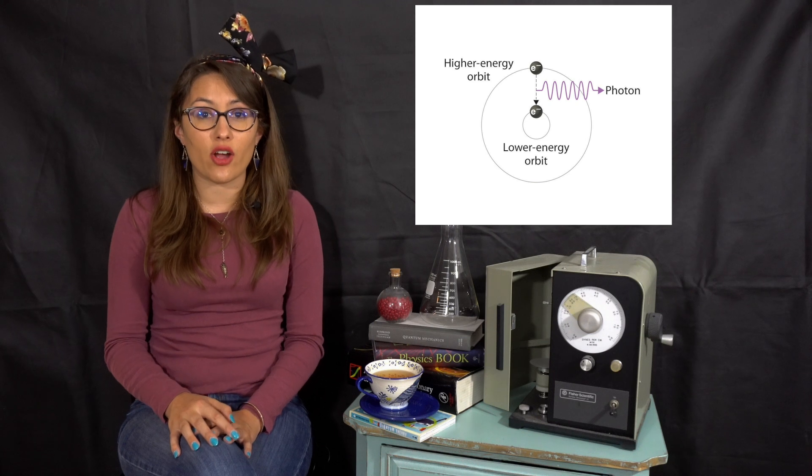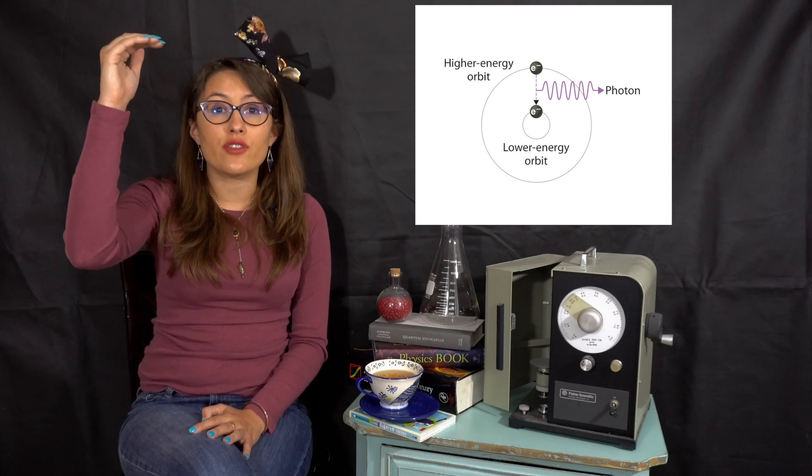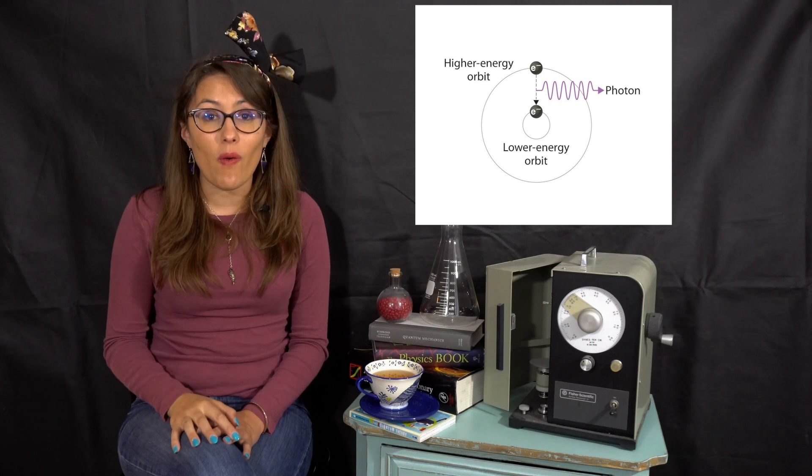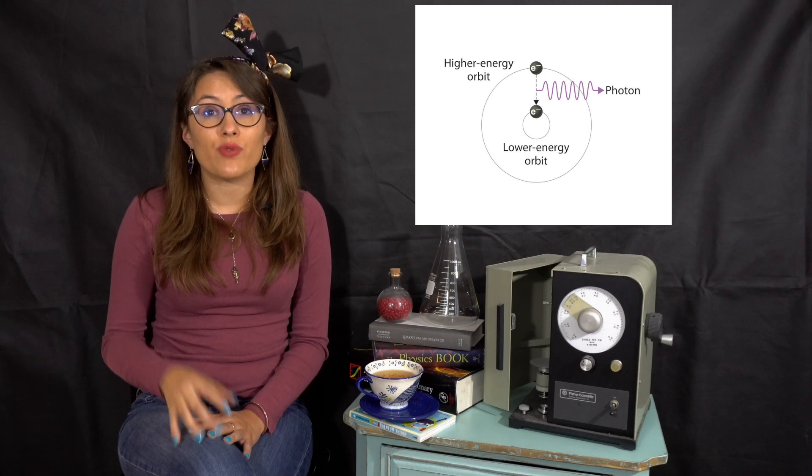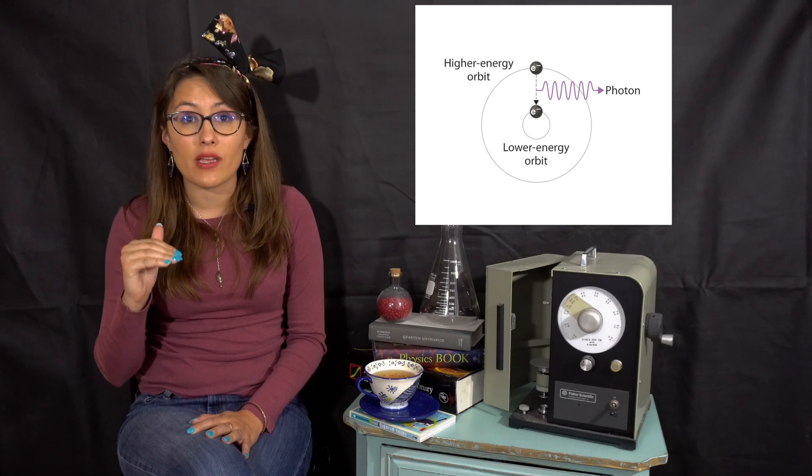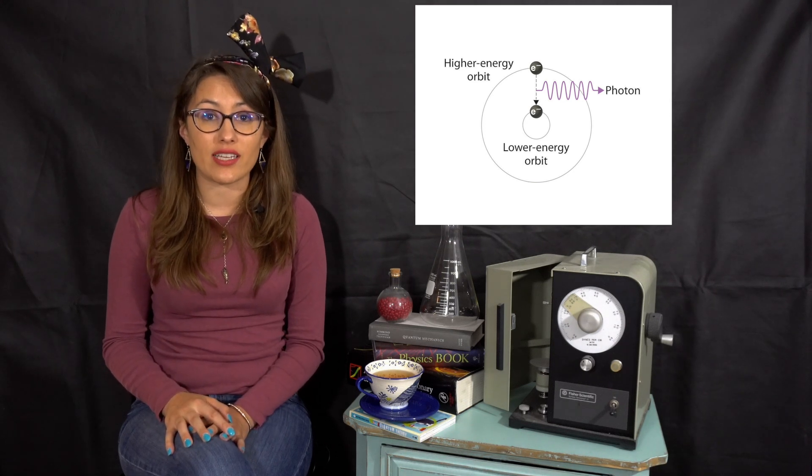Electrons absorb energy and are promoted, also known as excited, to a higher stationary state. At some point, the electron will relax back down to a lower orbit and will release this energy as a photon of light.